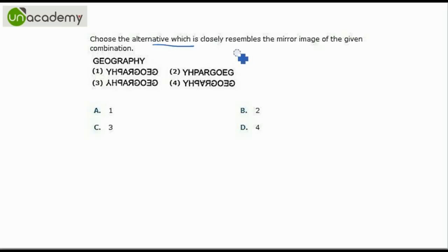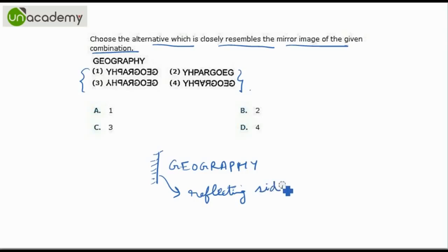We have to choose the alternative which closely resembles the mirror image of the given combination. The given word is geography and we have to find out of these four options an option that will closely resemble the mirror image. So mirror image will depend on the positioning of the mirror. We will place the mirror by default to the left side and this is the reflecting side of mirror.